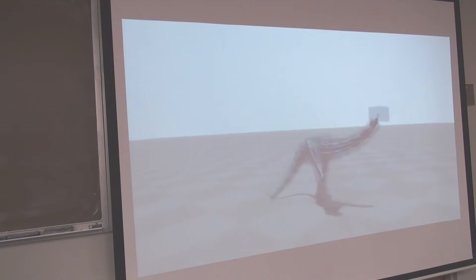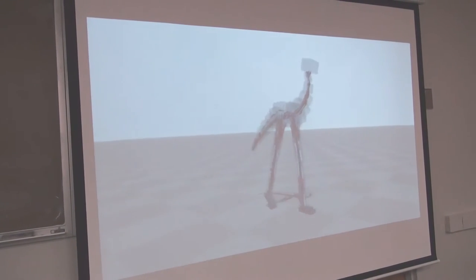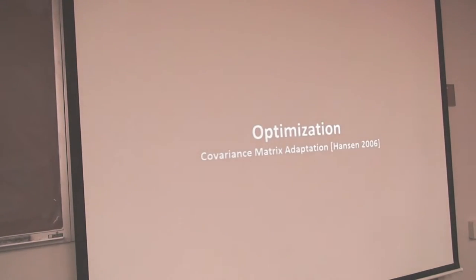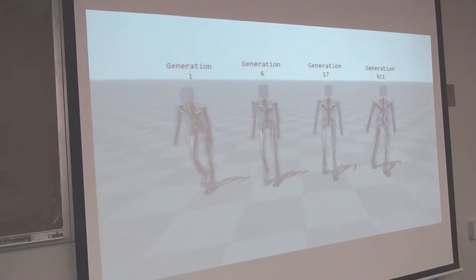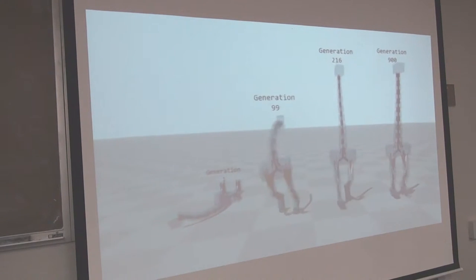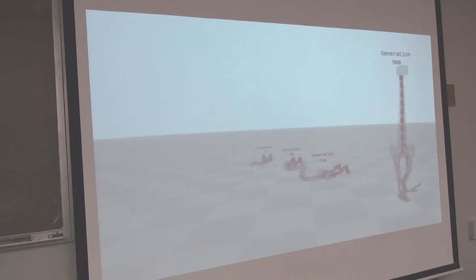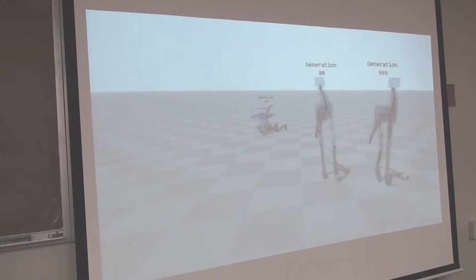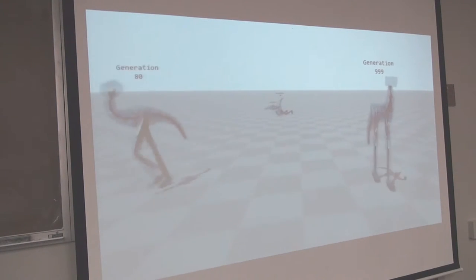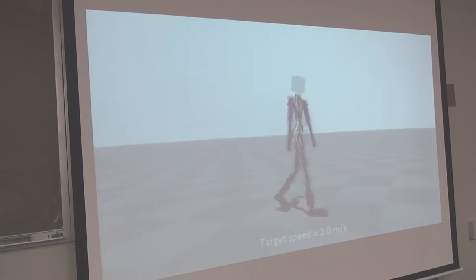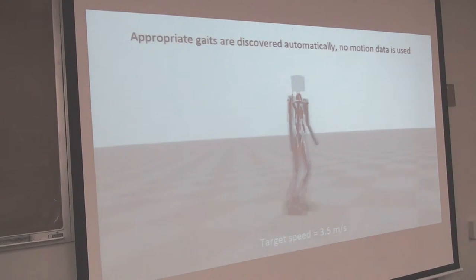The thing I find fascinating about this is they just look biologically plausible. That implies that biology's developing these gaits through similar mechanisms. After six generations they didn't do so well. After 17 generations they learned well. It took 900 generations to really learn how to walk. There's something about a physics simulator that we really relate to - we understand working in a physical environment.